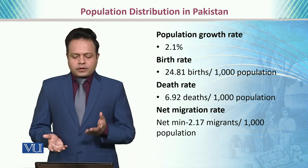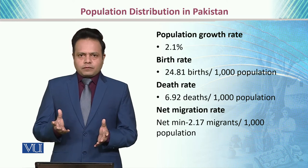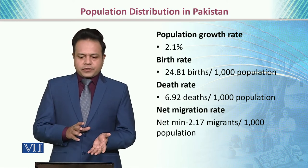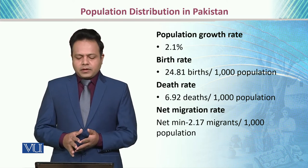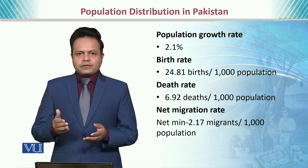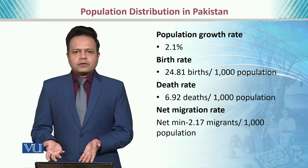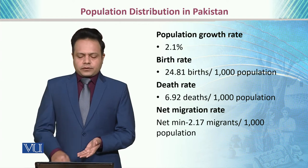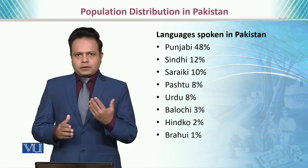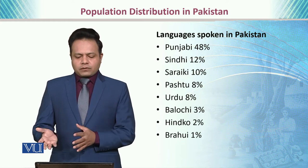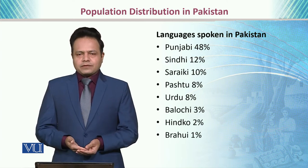If we talk about the net migration, which takes into view both immigration as well as emigration, the net migration is minus 2.17 per thousand population. This means that currently we have more people who are emigrating than those who are immigrating.